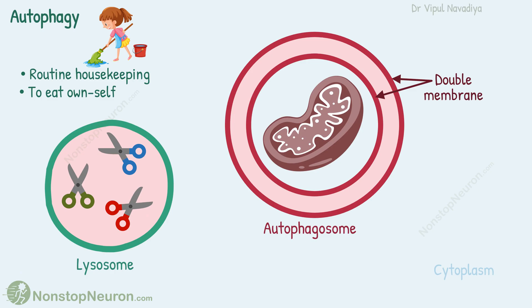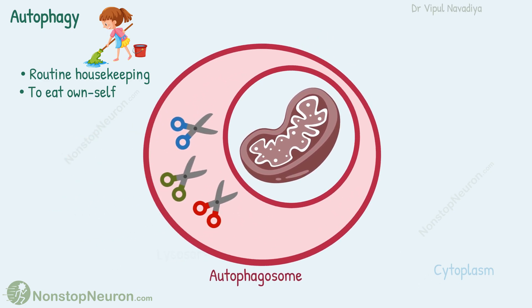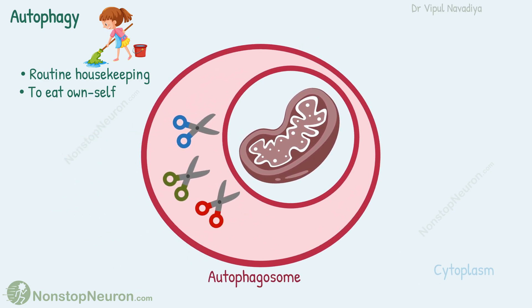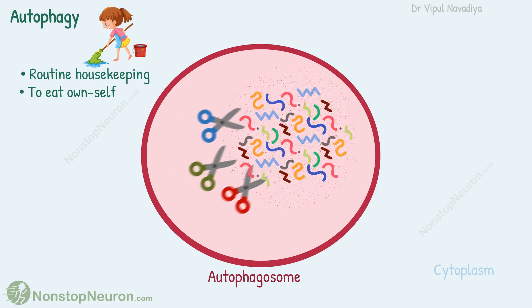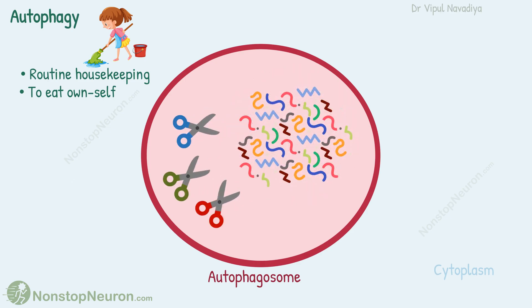The lysosome contains various hydrolase enzymes. The autophagosome fuses with this lysosome. Thus, the digestive enzymes of the lysosome mix with the material inside the autophagosome. Now these enzymes start digesting the organelles. The component nutrients like amino acids formed by this digestion are reused by the cell. This is how unnecessary organelles are degraded by the cell.